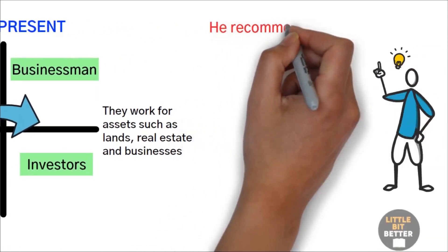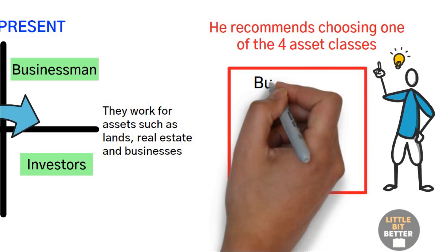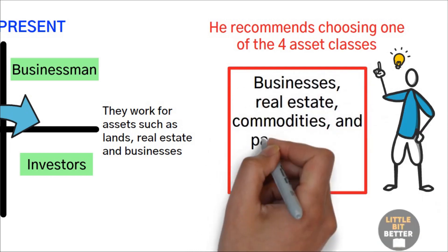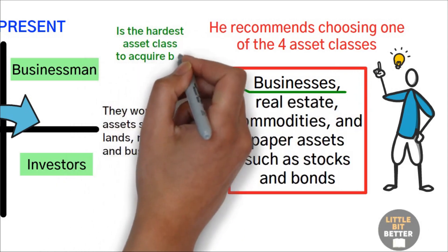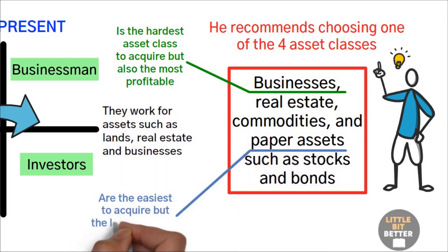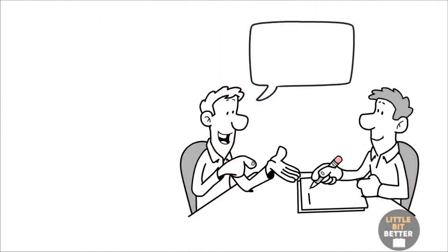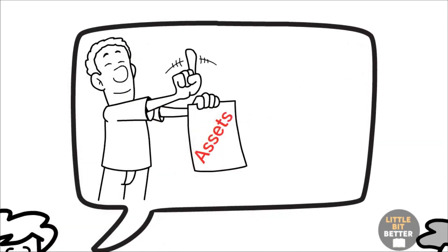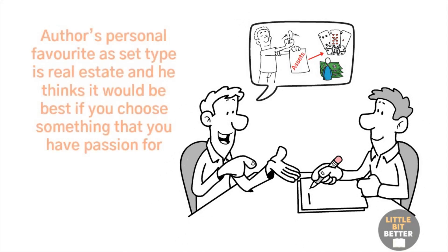And in order to do that, he recommends choosing one of the four asset classes. In case you don't know, the four asset classes are businesses, real estate, commodities, and paper assets, such as stocks and bonds. Business is the hardest asset class to acquire, but also the most profitable. On the other end, paper assets are the easiest to acquire, but less profitable and riskier. From recent interviews with the author, I have seen that he does not recommend investing in paper assets. He thinks that the stock market has become a big casino, where the winners are always the owners. The author's personal favorite asset type is real estate. And he thinks it would be best if you chose something that you have passion for.